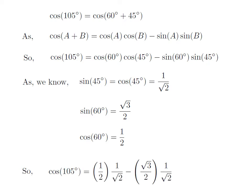Plugging these values into the equation for cosine of 105 degrees, we get cosine of 105 degrees is equal to one half into 1 over square root of 2, minus square root of 3 over 2 into 1 over square root of 2.